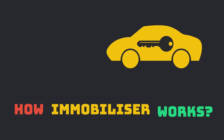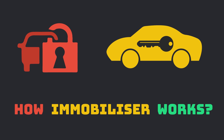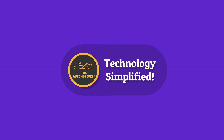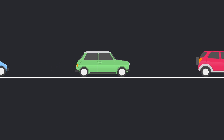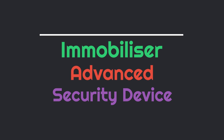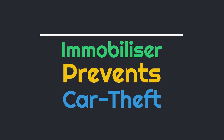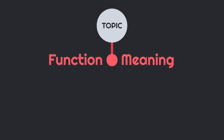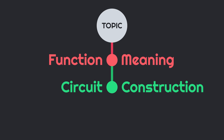Hello everyone, welcome to The Automotives. In this video we will discuss what is an immobilizer and how it works. In the modern automobile era, almost every premium car is equipped with an immobilizer. A vehicle immobilizer is an advanced security system that uses advanced techniques and algorithms to identify the original car key and prevent vehicle hijacking with duplicate or master keys. We will discuss the meaning and function of immobilizer, its construction and circuit diagram, and finally its working.